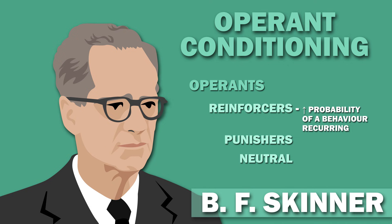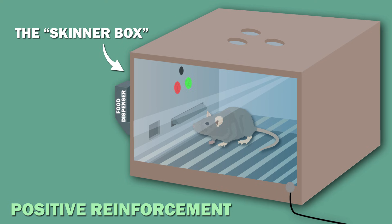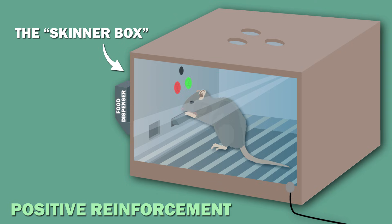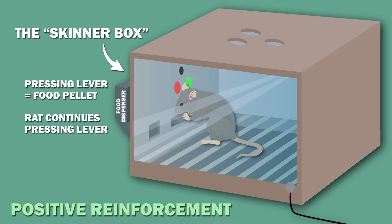Reinforcers increase the probability of a behavior recurring, punishers decrease the probability or extinguish the behavior, and neutral operants do neither. To demonstrate positive reinforcement, Skinner put a rat in a box with a lever. On accidentally bumping the lever, the rat discovered it would receive a food pellet. With this positive reinforcement, the rat learned to keep pressing the lever.